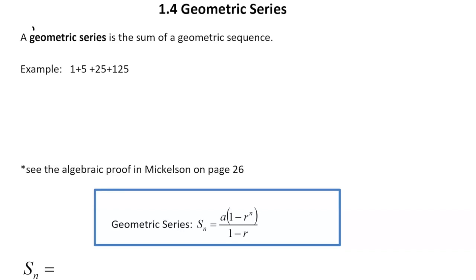Hi everyone. Today we're going to take a look at geometric series. From Math 10, we talked about arithmetic sequences and arithmetic series. A series means taking the sum of a bunch of terms and adding them together. So a geometric series takes a geometric sequence and instead of separating terms by commas, you add each of those terms together. An example is 1 plus 5 plus 25 plus 125 and so on. Another example would be 4 plus 12 plus 36 plus 108.